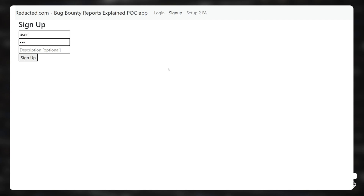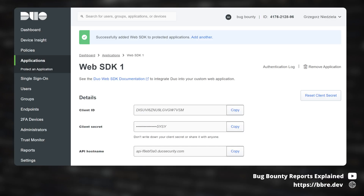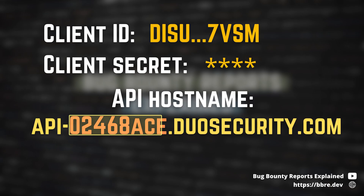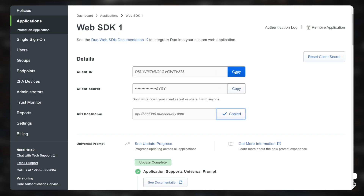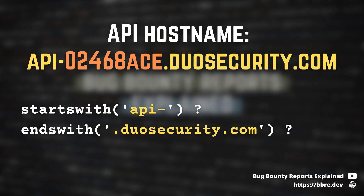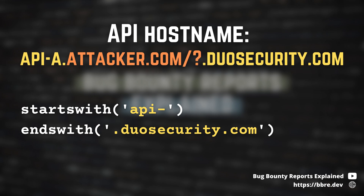I found this bug on a private program, let's say it's Redacted.com. There is a way to set up two-factor authentication via Duo. The way it works is you create an account on Duo. It generates credentials for you and assigns a subdomain that looks like this: api-random.duosecurity.com. To set it up on Redacted.com, you copy these credentials and the host name. Then Redacted does the validation — it checks if the host starts with 'api-' and ends with 'duosecurity.com'. And these validations are robust if you do them on the host, but Redacted.com did not. It didn't normalize the address and these validations were run on your whole input, not just on the host.